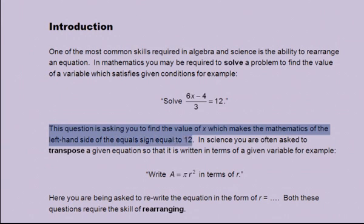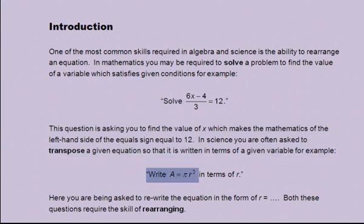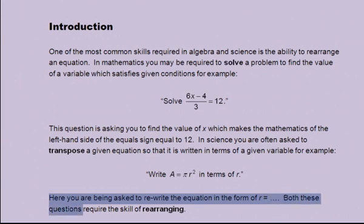This question is asking you to find the value of x which makes the mathematics of the left hand side of the equals sign equal to 12. In science you are often asked to transpose a given equation so that it is written in terms of a given variable. For example, write A = πr² in terms of r. Here you are being asked to rewrite the equation in the form of r equals some mathematics. Both these questions require the skill of rearranging.